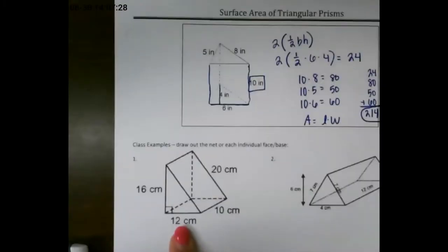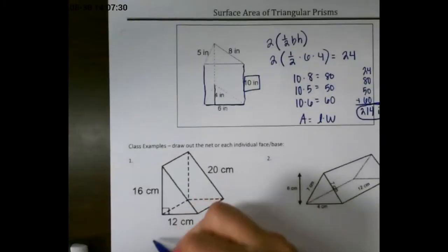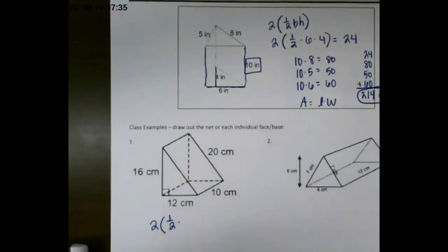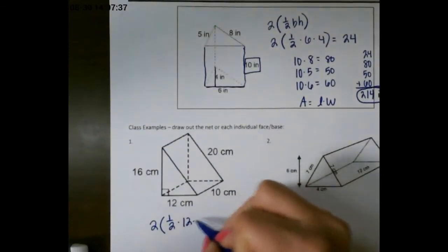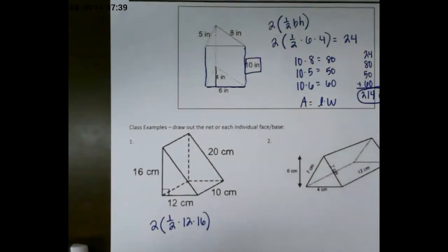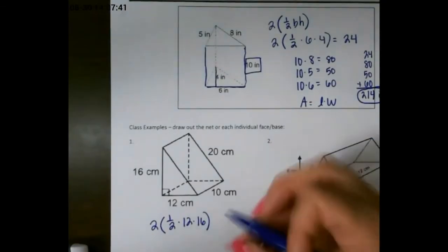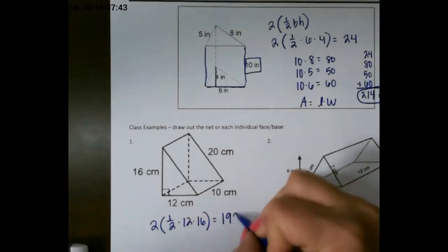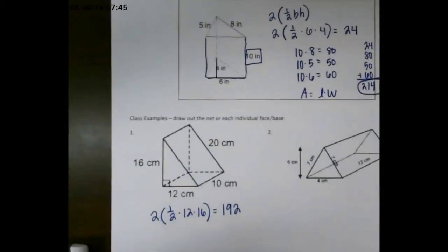For our next example, again, we have two triangles that are the exact same, so we do two of one-half base times height, the base being 12, and the height being 16. So my area of both triangles would be 192 centimeters squared.